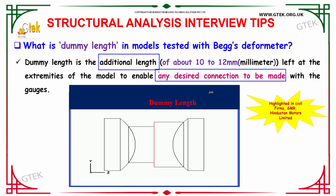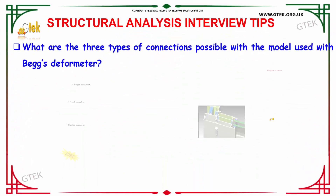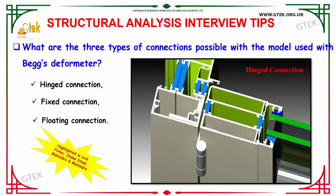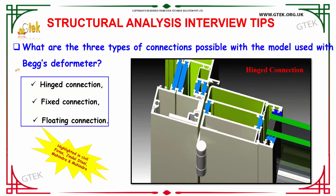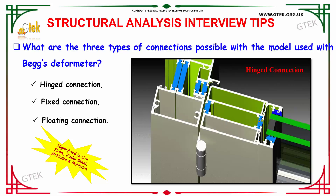The next question is: what are the three types of connections possible with the model used with the Beggs Deformeter? The three types of connections possible are hinged connection, fixed connection, and floating connection. A hinged connection uses hinges, a fixed connection is fully fixed, and a floating connection has a floating characteristic.